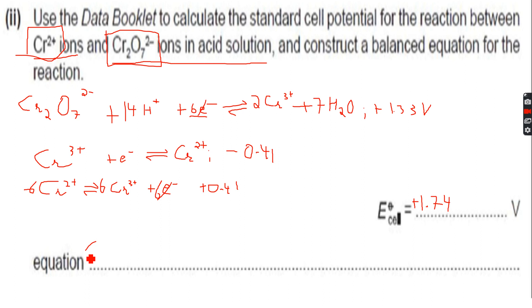Now when we add the two half equations we get Cr₂O₇²⁻.